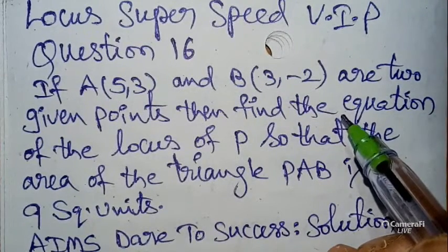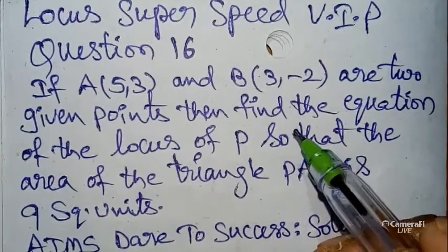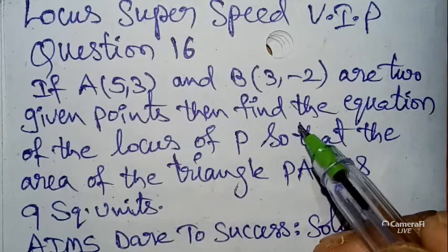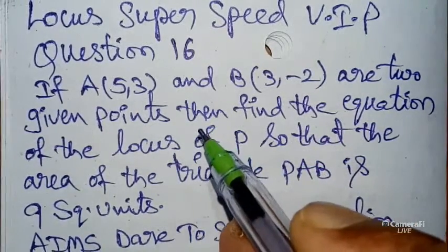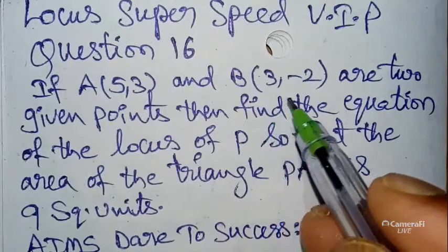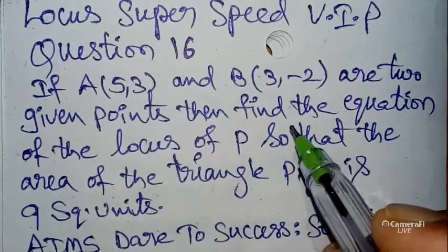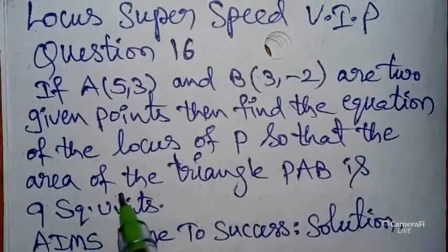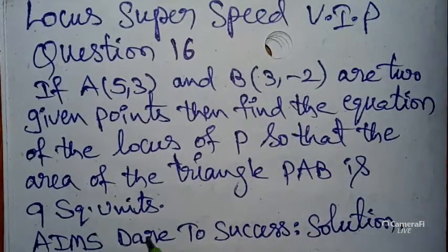Please go through all those questions — you will get 100% sure success. Today's interesting question, highly demanded by students: if A(5, 3) and B(3, -2) are two given points, then find the equation of the locus of P such that the area of triangle PAB is 9 square units.